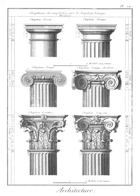Basilica: originally a Roman large roofed hall erected for transacting business and disposing of legal matters. Later the term came to describe an isled building with a clerestory. Medieval cathedral plans were a development of the basilica plan type.